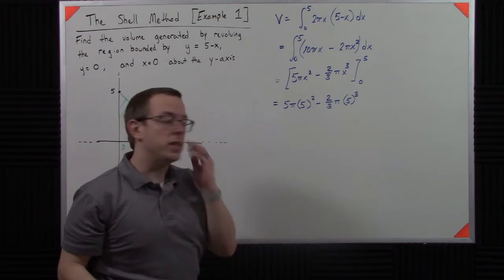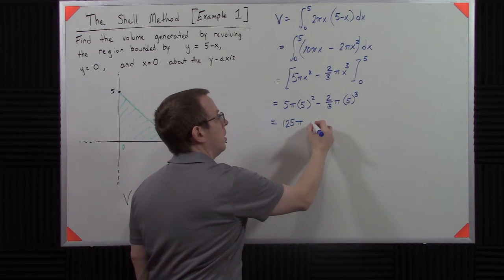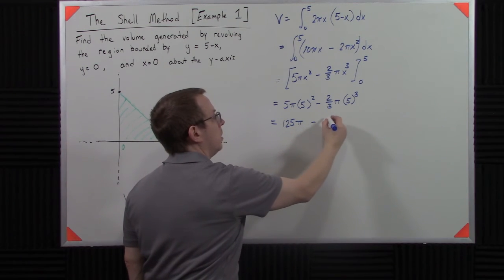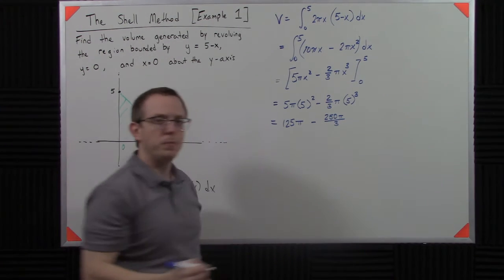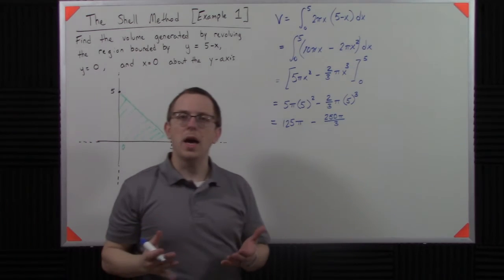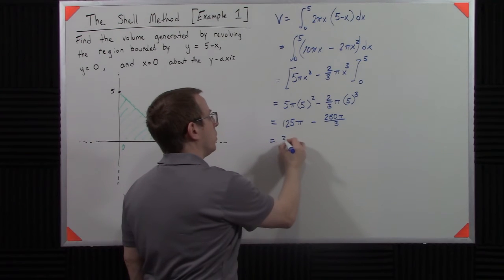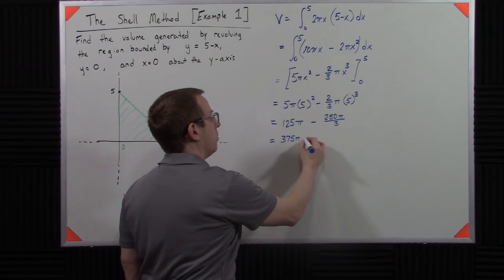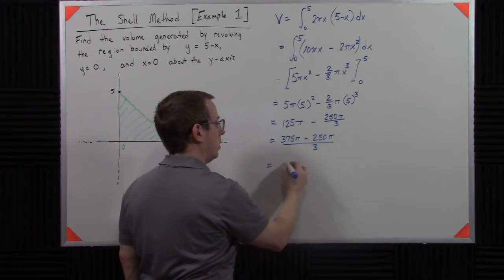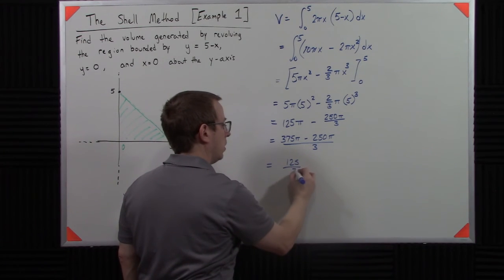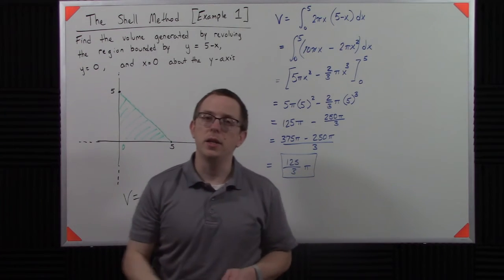Now multiplying this out, I get 125 pi minus 250 pi over 3. Now, by doing that, we can get a common denominator. That'll be 3. That'll give us 375 pi minus 250 pi all over 3. So 125 thirds pi is going to be your answer.